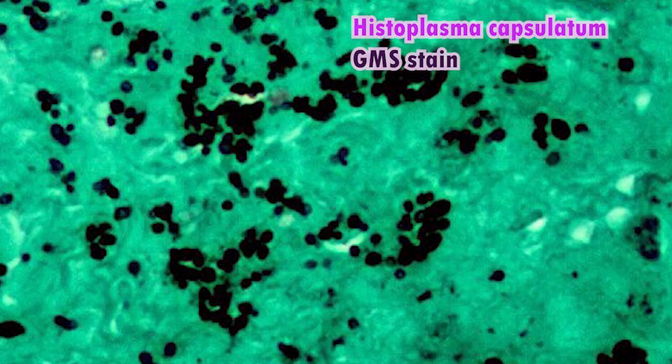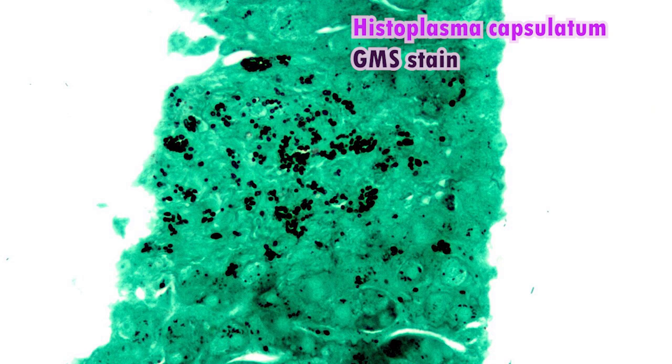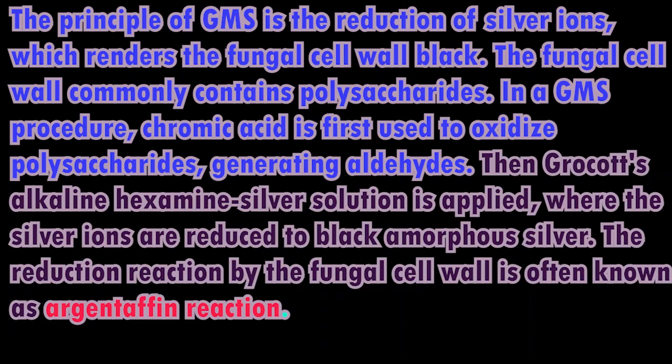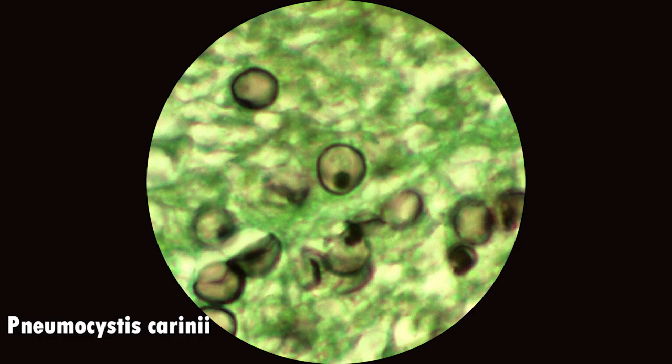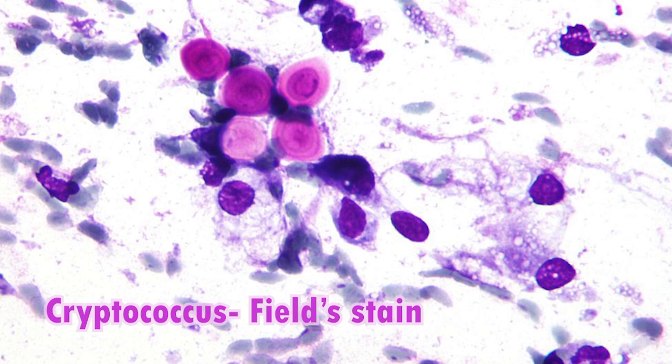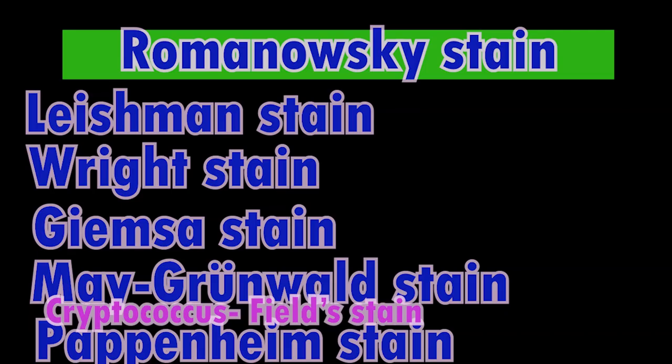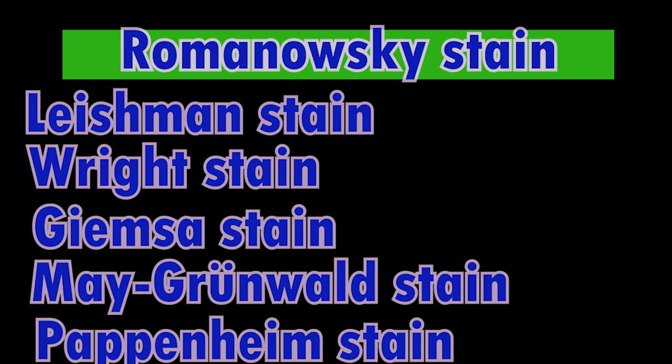Grocott's Methenamine Silver (GMS) stain is widely used as a staining method for fungal organisms. It is particularly useful in staining carbohydrates. GMS stain can be used to identify the yeast-like fungus Pneumocystis jirovecii, which causes pneumocystosis. The cell walls of these organisms are outlined by the brown-to-black stain.